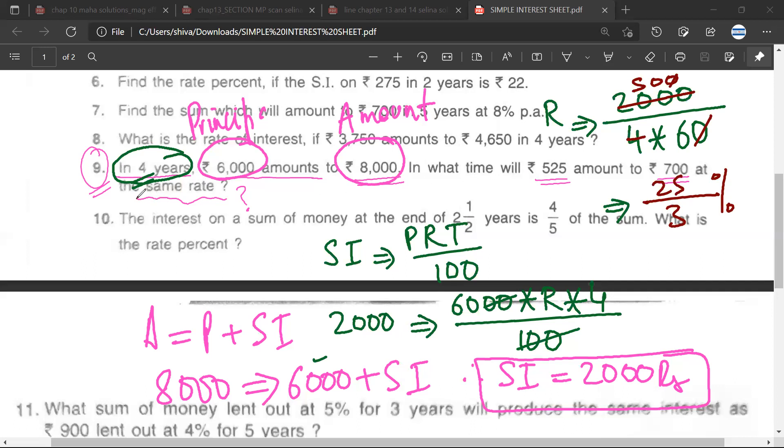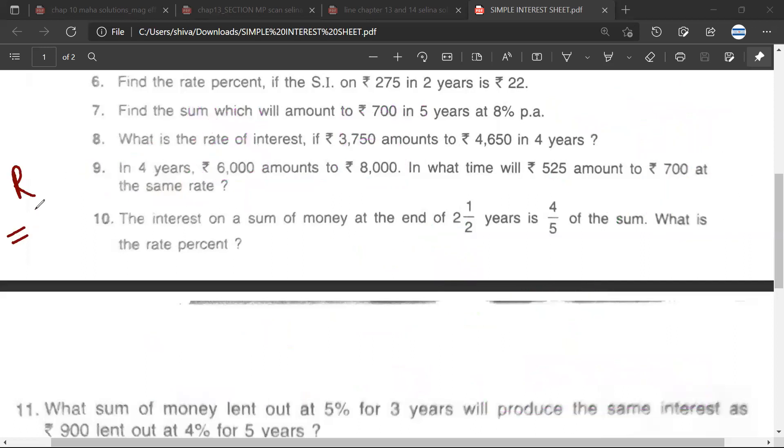At the same rate, that is why we wanted to find the rate. The rate is 25 by 3 percent. Now we know the rate is 25 by 3 percent and it will remain the same for converting 525 into 700. Is it correct? Yes sir.